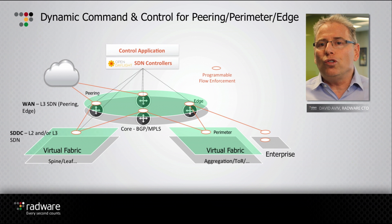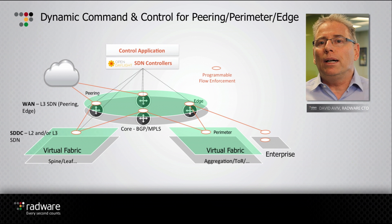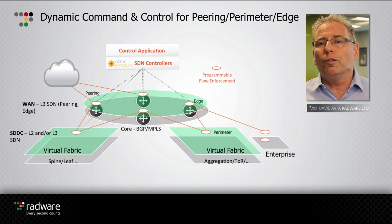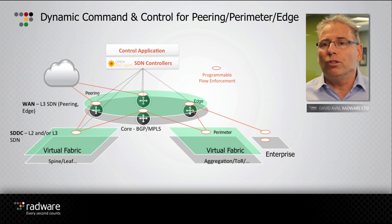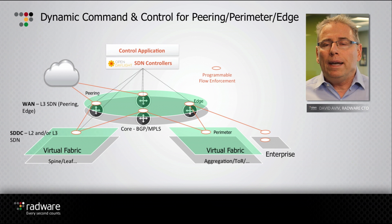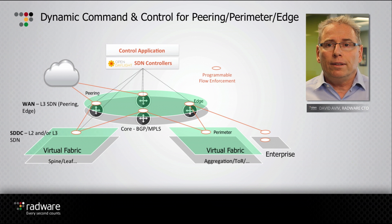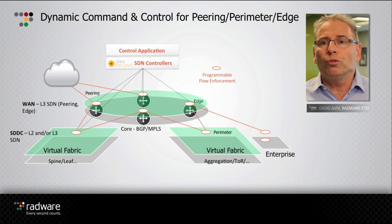So what are the issues from the cyber point of view in this structure? You can see here points marked both at the data centers and at the network as programmable flow enforcement points. Those are usually the points in which we would like to control the cyber policy and cyber strategy. Those points consist of the peering, perimeter, and edge networks typically in the network. In that setup we do see an SDN controller or controllers typically for data centers and wider networks, and a new generation of control applications.